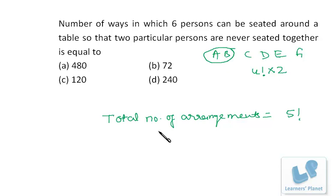So this is 4 factorial times 2, or I can say 48. This is 120. So these are the total number of arrangements, and these are the arrangements when they are always together.